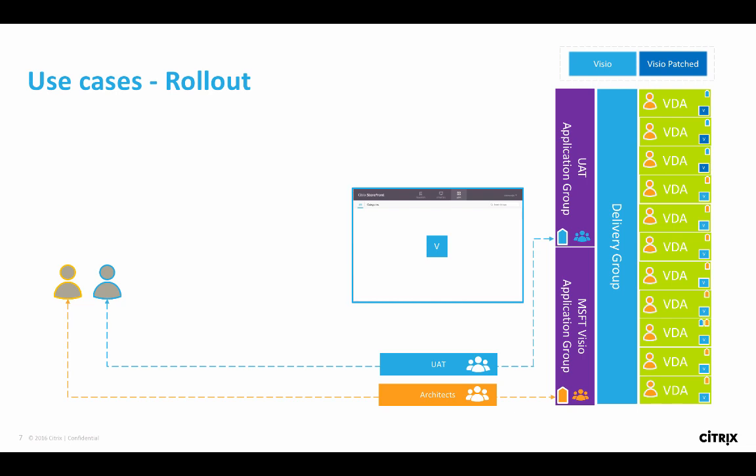Another use case is how you would roll this out. It's a similar concept with different names for the app groups but essentially the same idea. What I have here is three VDAs running the UAT environment and the rest running the standard Visio environment. The orange-tagged VDAs are launching as expected, and these three are a different — patched — version of Visio. You can do your UAT testing, and once you're done, you can roll this out to all users by simply changing that tag.